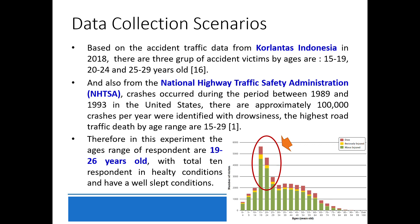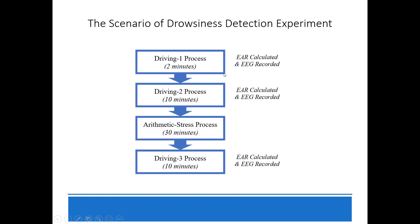There are 10 respondents in healthy condition and having had adequate sleep. This is our scenario of the drowsiness detection experiment process. Step 1 is driving process 1, with a duration of about 2 minutes, followed by step 2, driving process 2, with a duration of 10 minutes, then the arithmetic stress process, with a duration of 30 minutes, and finally driving process 3, with a duration of 10 minutes.